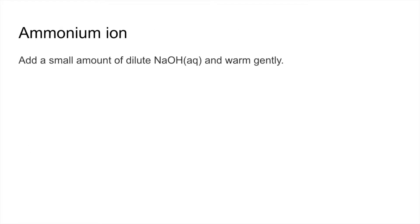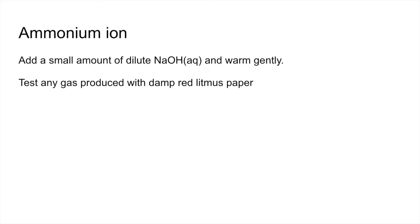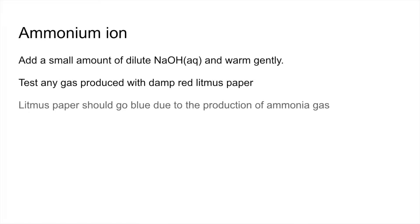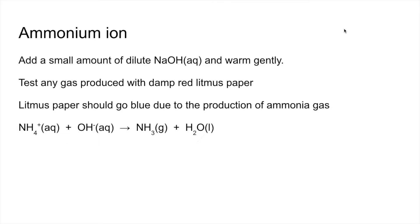Starting with the ammonium ion: you add a small amount of dilute sodium hydroxide and you warm gently. You test any gas produced with damp red litmus paper, and the litmus paper should go blue due to the production of ammonia gas. There's the ionic equation, and it's this ammonia gas that causes the litmus to go blue.